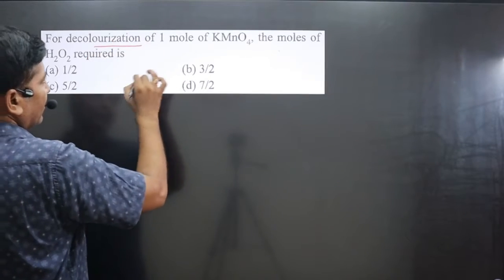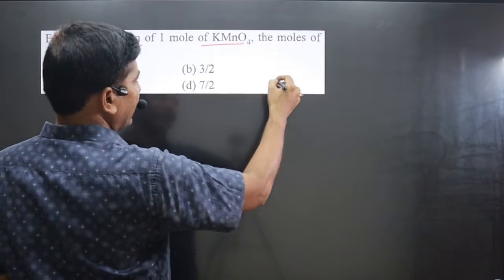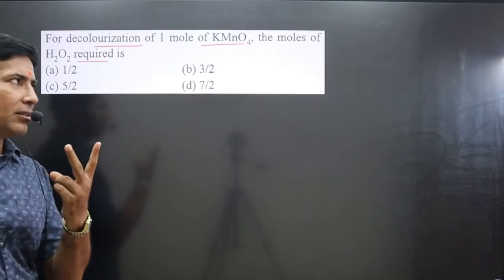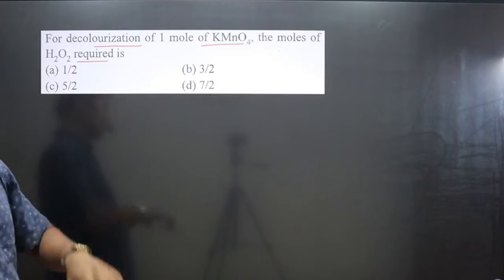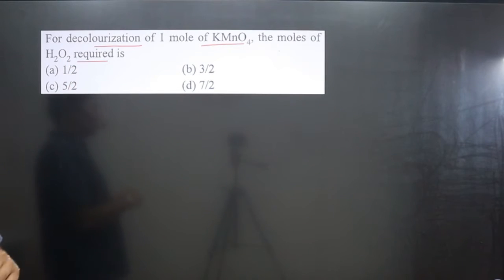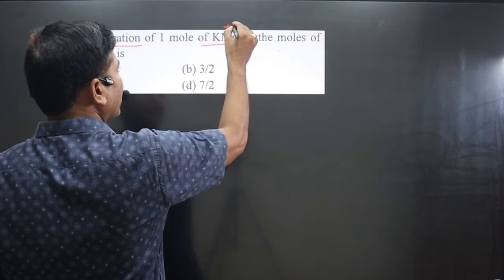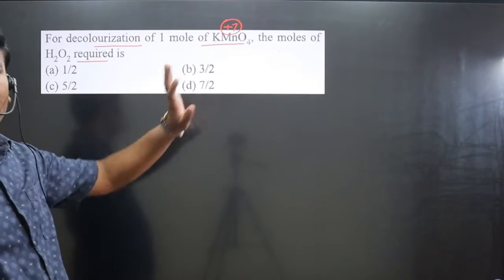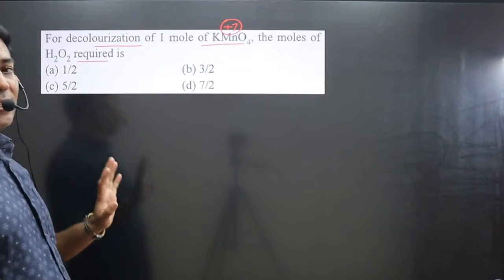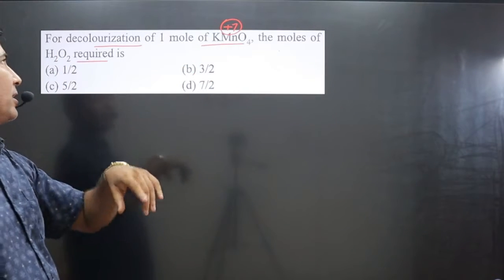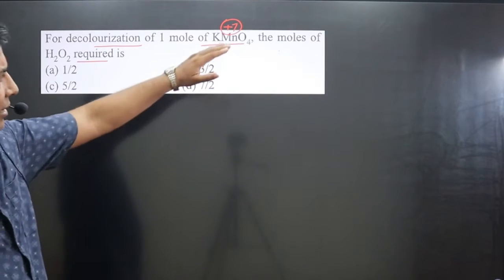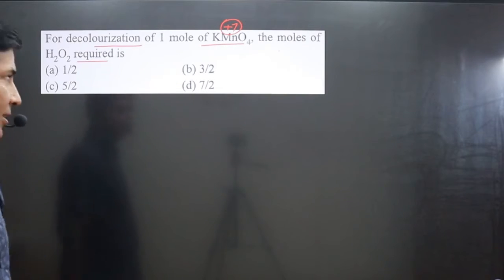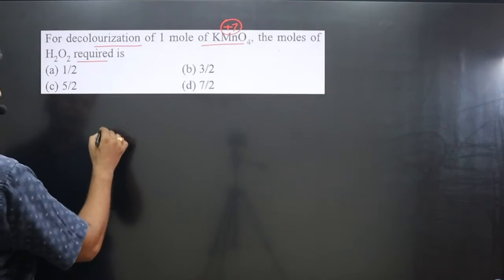The question asks: for decolorization of one mole of KMnO₄, how many moles of H₂O₂ are required? Two substances are participating in the reaction — KMnO₄ and H₂O₂. KMnO₄ is a strong oxidizing agent because its central element manganese is present in its highest oxidation number (+7). H₂O₂ is also an oxidizing agent, but KMnO₄ is stronger. Since KMnO₄ acts as the oxidizing agent, H₂O₂ will act as the reducing agent.